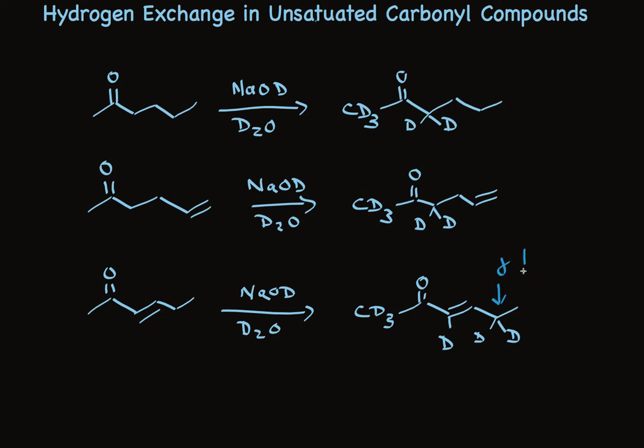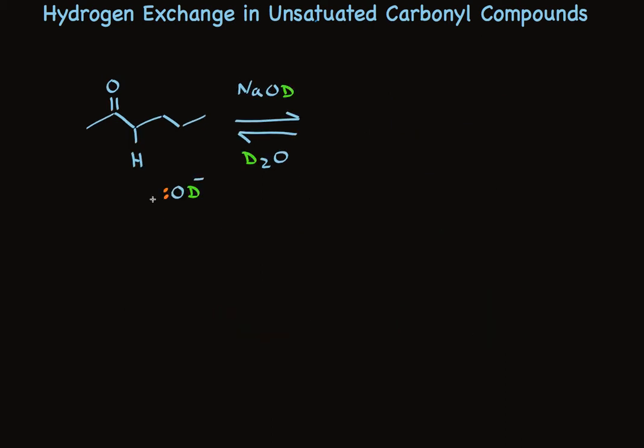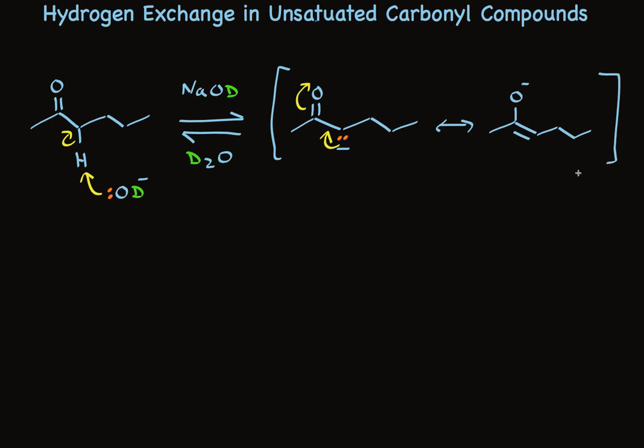Let's take a look at base-catalyzed exchange of alpha-hydrogens first. The alpha-hydrogens are especially acidic because they form a resonance-stabilized enolate. So I picture the removal of that hydrogen by base to form an anion that is resonance-stabilized. Those electrons can form a double bond there while this pi-bond breaks. And it's this second resonance structure that's especially stable because the negative charge is on oxygen.